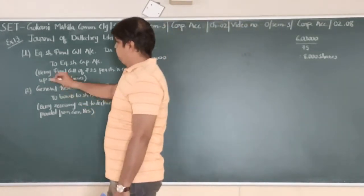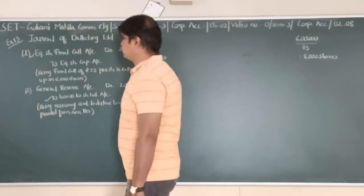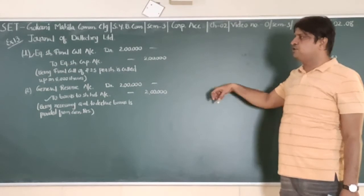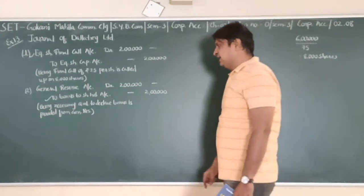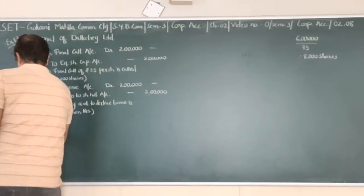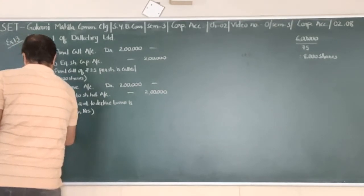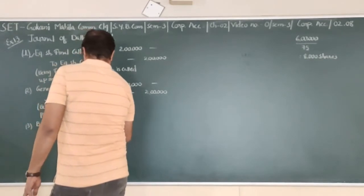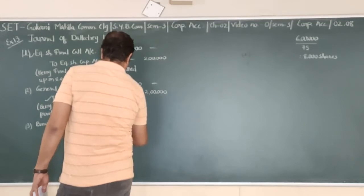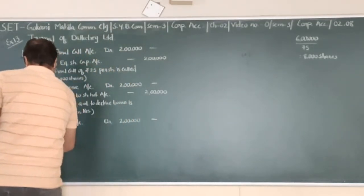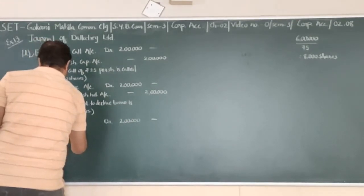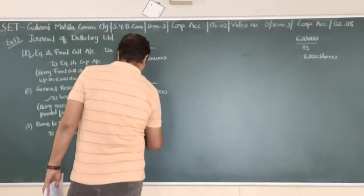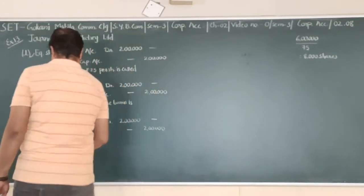Now see we have two temporary accounts: share call and bonus to shareholders. So these two accounts are going to be closed interchangeably. Bonus to shareholders debit and share call credit. So third entry is bonus to shareholders account 2 lakh debit to share call account credit.